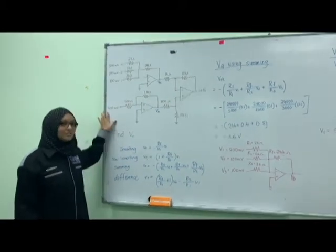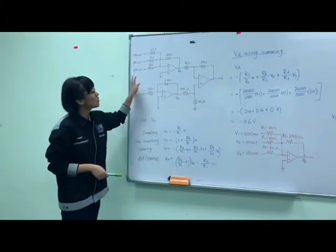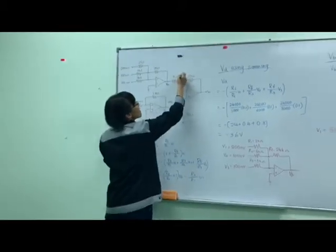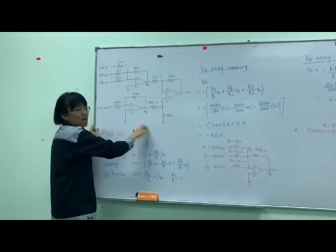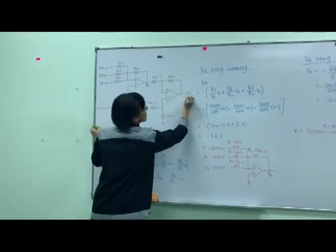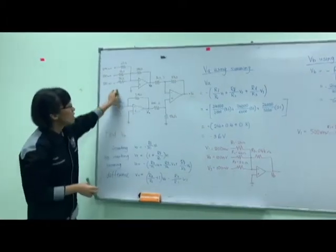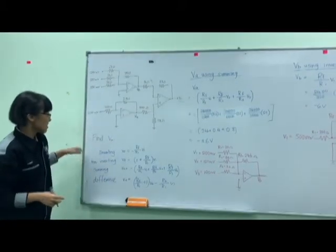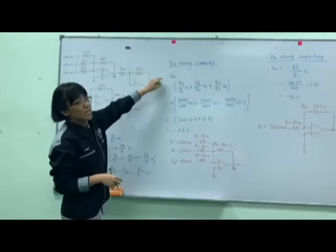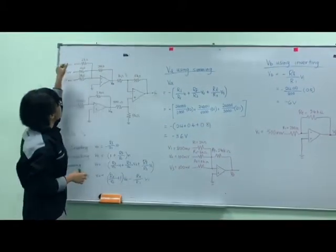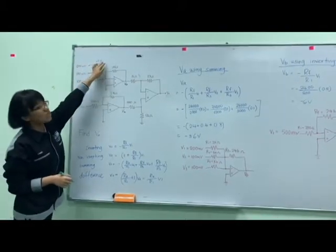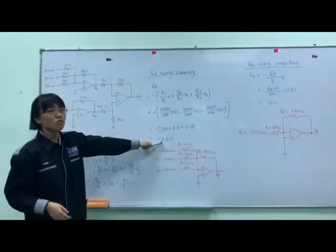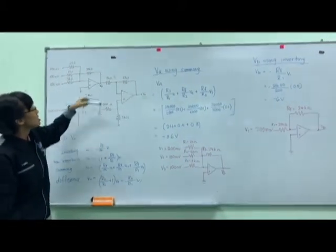We are going to use these equations to solve this circuit. First, we need to find the outputs for VA and VB. For VA, we are using the summing method. We apply the summing formula, converting the millivolt values into volts. After inserting all the values, we get negative 3.6V for VA, which is the output for this part of the circuit.